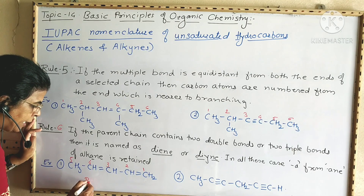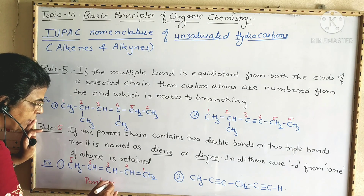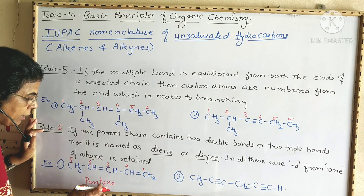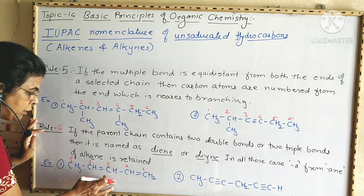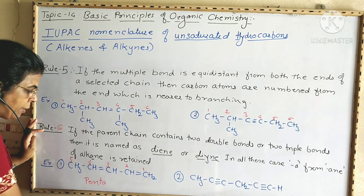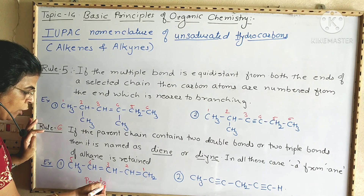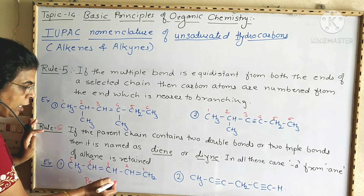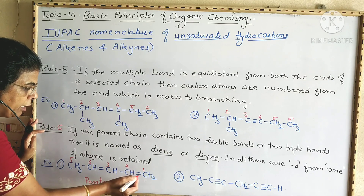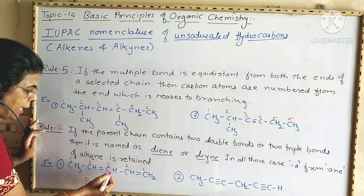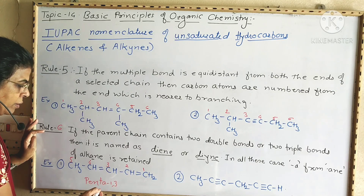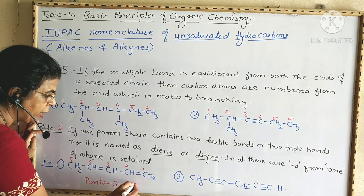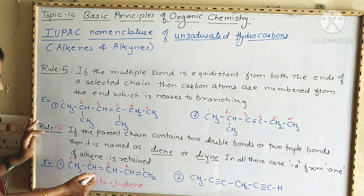Since there are two double bonds, we cannot drop the 'a', so the name retains it. The two double bonds are at carbon one and carbon three. Therefore, the name becomes penta-1,3-diene. This illustrates that the 'a' from pentane is retained before the -diene suffix when two double bonds are present.